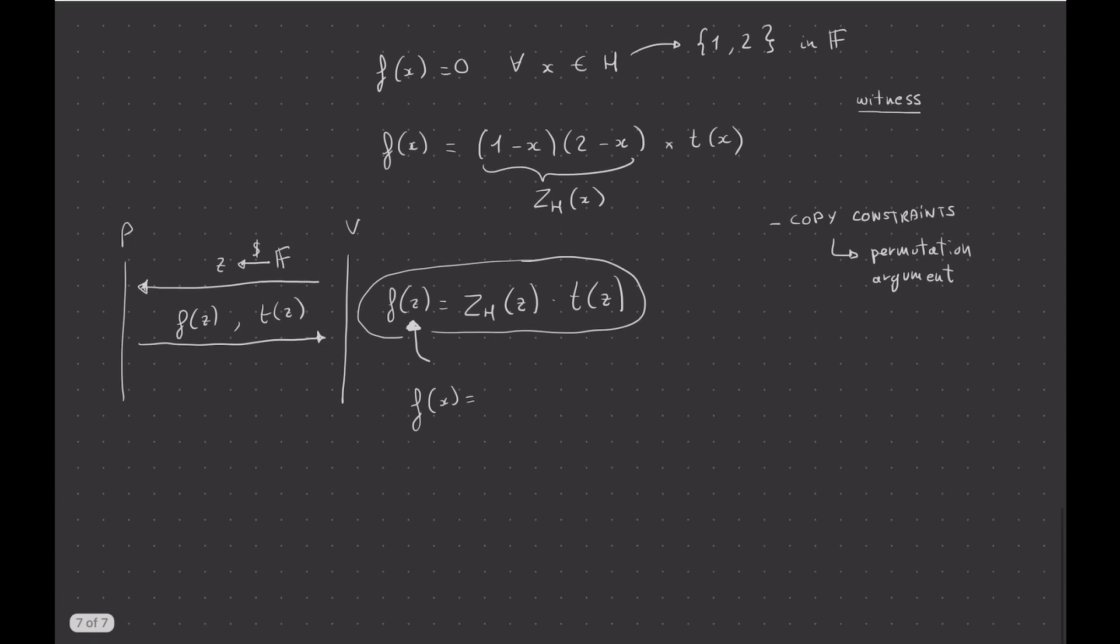And so basically, here we can think that instead we're sending l of z, r of z, and o of z. And instead of checking that equation,